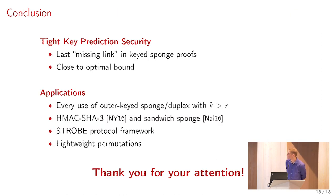To conclude, this key prediction security was basically the last missing link in the key sponge proofs. Somewhere hidden in this key sponge proof analysis there was this term, but it was not optimal for various results. It's close to the optimal bound, there is a small loss due to a proof technique, but there is no attack faster than a key recovery. It applies basically to every usage of the outer key sponge with a key larger than a rate. There are other examples like HMAC-SHA-3 of Naito and Yasuda and the sandwich sponge that used the result of Ghazi et al. as a black box, and now they can use the new result. Then there is the strobe protocol framework and also in lightweight permutations. That concludes my talk. I'd like to thank you for your attention.